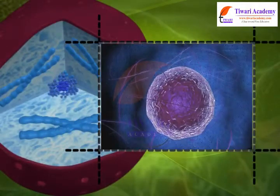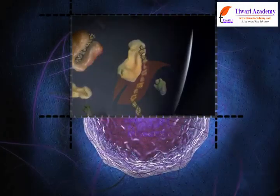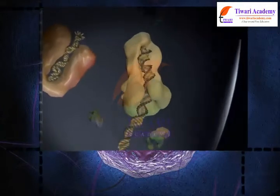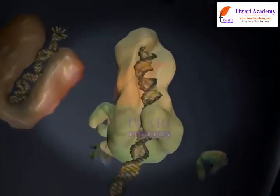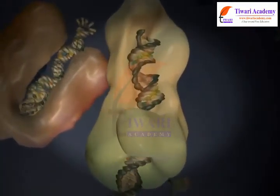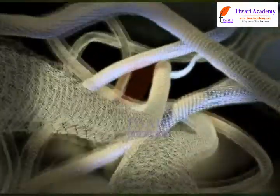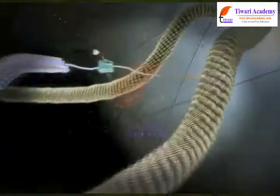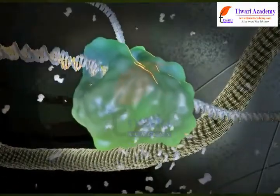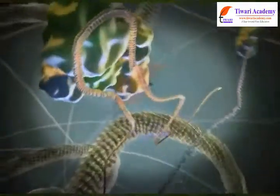The nucleolus is a granular body present within the nucleus and consists of RNA and protein. RNA stands for ribonucleic acid. The nucleolus is the site of ribosomal RNA synthesis and ribosome subunit assembly.